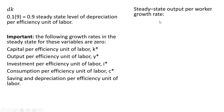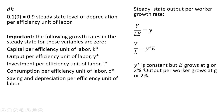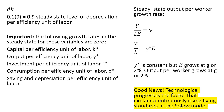Now let's look at steady-state output per worker, which is different from output per efficiency unit of labor. Output per worker is Y divided by L, which equals lowercase y times E. Since y-star is constant but E grows — efficiency of labor grows at 2% — output per worker grows at 2% per year in the steady state. Output per efficiency unit of labor does not grow in the steady state, but output per worker does once we incorporate technological change. Technological progress is the factor that explains continuously rising living standards in the Solow model — it's the only factor that does that.